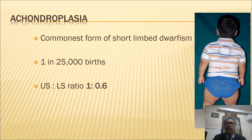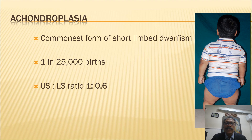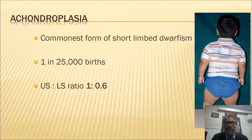Achondroplasia is the commonest form of short-limbed dwarfism, present in about one out of 25,000 births. The main thing to know is that the upper segment to lower segment ratio is 1 to 0.6, whereas in normal persons this ratio is almost 1 to 1.06 — that is, the limbs are a little longer than the upper segment — which gives us the possibility of lengthening them.